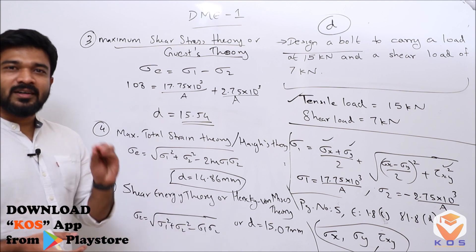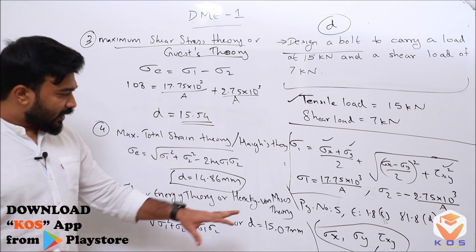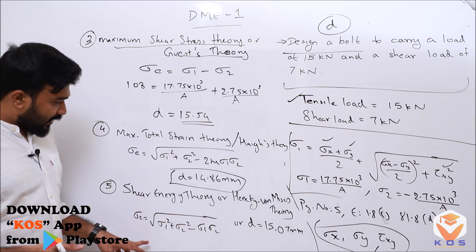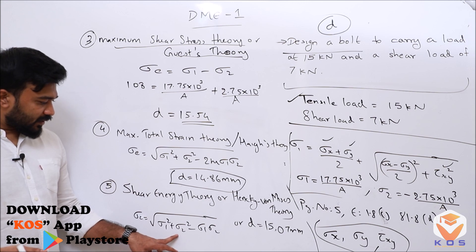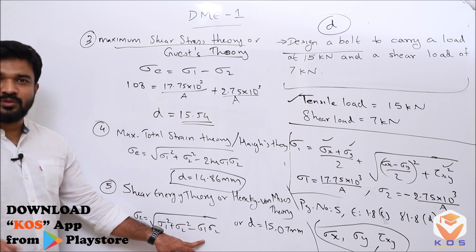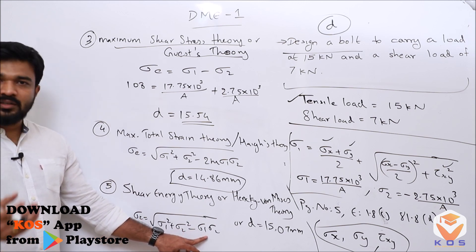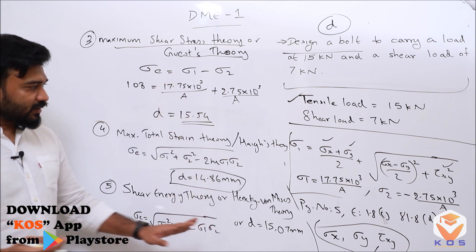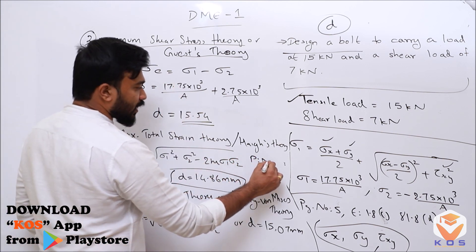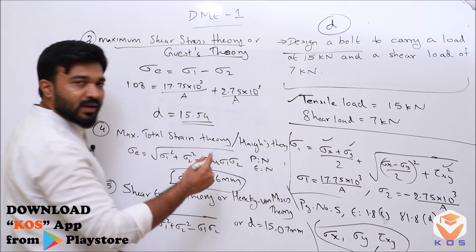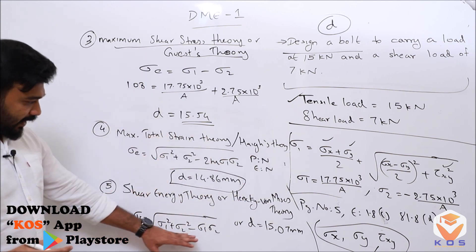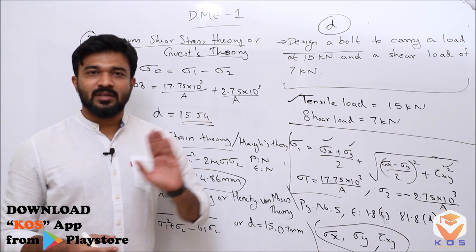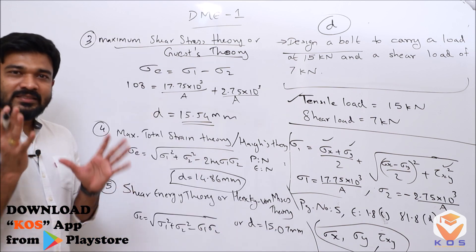The fifth and last theory is the Distortion Energy Theory — von Mises / Henky theory. The formula is sigma_e equals the square root of (sigma_1² + sigma_2² − sigma_1 × sigma_2), from page number 22 of the data book. Substituting the values, we get diameter d = 15.07 mm.